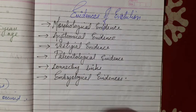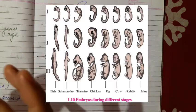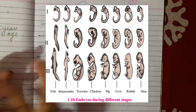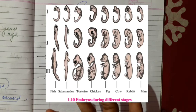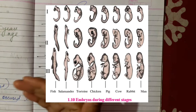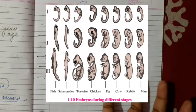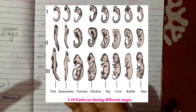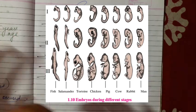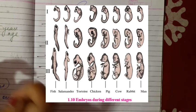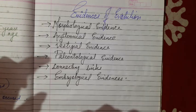The last evidence is embryological evidence. If we compare the initial embryo stages of every vertebrate, there are maximum similarities. But as the duration and stages increase, the similarities decrease, showing differences between organisms. However, the earlier similarities seen in embryonic structures of various organisms suggest that they must have had some common ancestors.